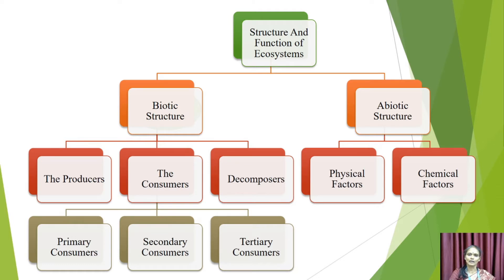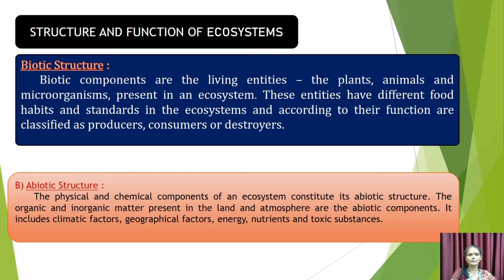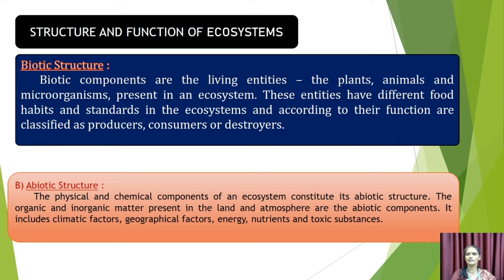Structure is mainly classified into two types: biotic and abiotic structure. Biotic components are the living entities — the plants, animals and microorganisms present in an ecosystem. These entities have different food habits and standards in the ecosystem, and according to their function are classified as producers, consumers, or decomposers.